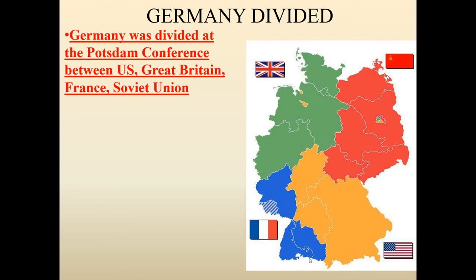After World War One, Germany was forced to pay money, reduce their military, and give up land. Now Germany has pretty much no control over their own country — these four powers are coming in and dividing the country and basically controlling their zone. You can see in this map that we have these four different zones, and the red zone is the USSR zone. But what's interesting is this little area right here — this is Berlin, the capital city, which has a lot of the economic influence on the country. And notice Berlin is also divided.